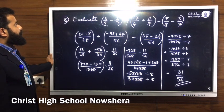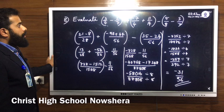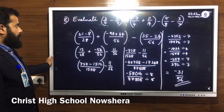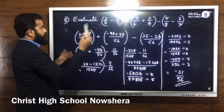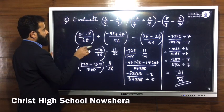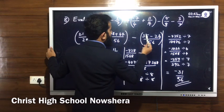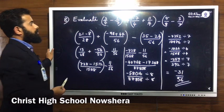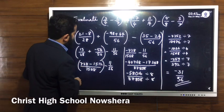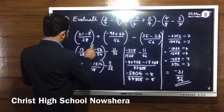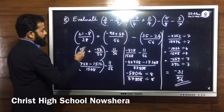Question number 8: evaluate 3 by 4 minus 2 by 7 plus minus 7 by 4 plus 11 by 14 minus 5 by 8 minus 3 by 7. First bracket: 3 by 4 minus 2 by 7. Do the calculation inside the bracket first — cross multiply to get 21 minus 8 divided by 28. Then the second bracket: minus 54 divided by 56 plus 44 divided by 56.